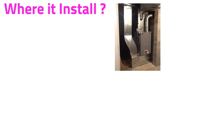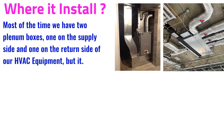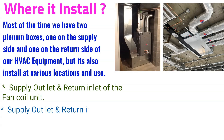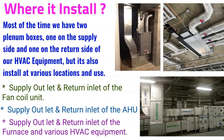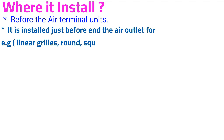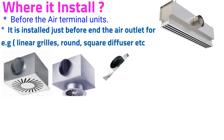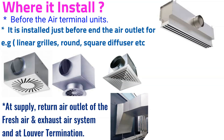Most of the time we have two plenum boxes — one on the supply side and another on the return side of the HVAC equipment. They are installed at various locations: the supply outlet and return inlet of the fan coil unit, the supply outlet and return inlet of the air handling unit, the supply outlet and return inlet of the furnace, before air terminal units just before the air outlet such as linear grills and round and square diffusers, and at supply and return air outlets of fresh air and exhaust air systems and at louver terminations.